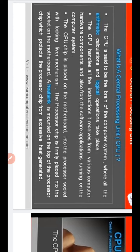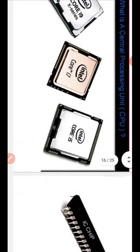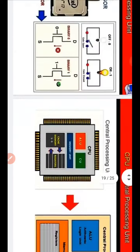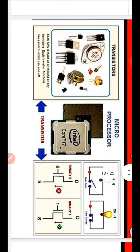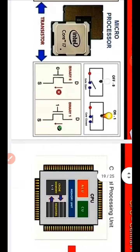A heat sink is mounted on the top of the processor chip, which protects the processor chip from excessive heat generation. The CPU is made up of millions of tiny transistors. Each transistor functions like a switch, which can be on or off.